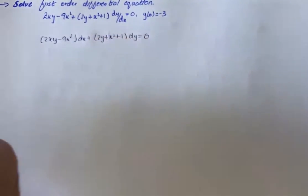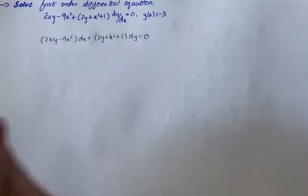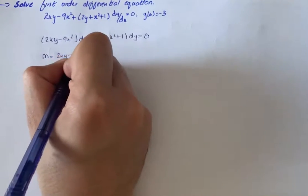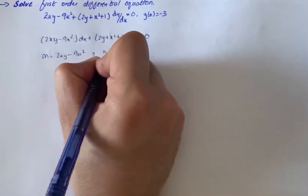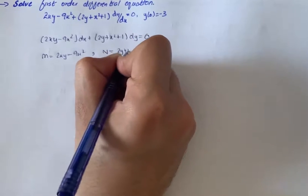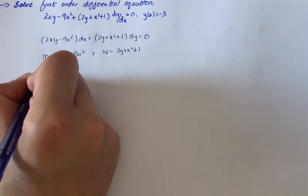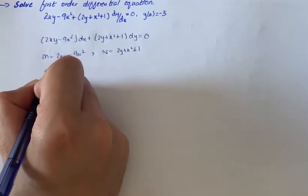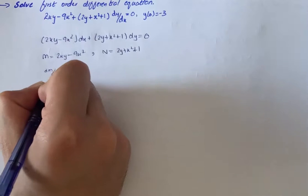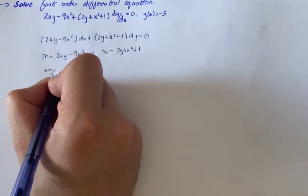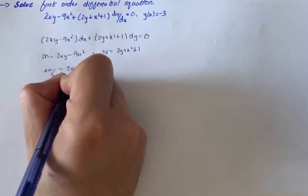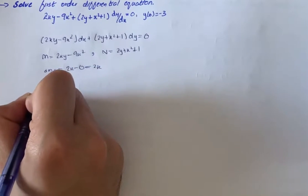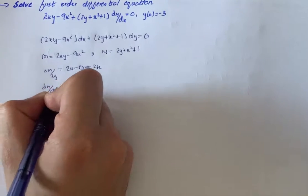Now we compare with M dx plus N dy. We know that M equals 2xy minus 9x squared, and N equals 2y plus x squared plus 1. So we have dM/dy equals 2x minus 0, that is equal to 2x. Then we have dN/dx.